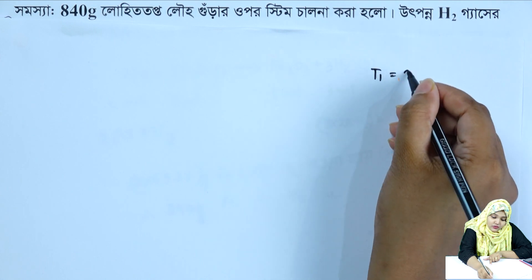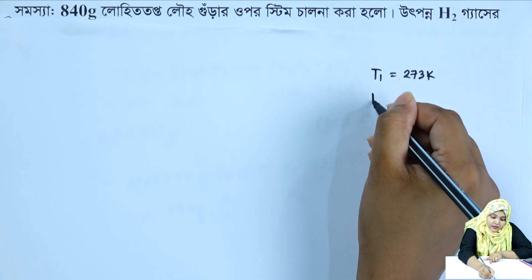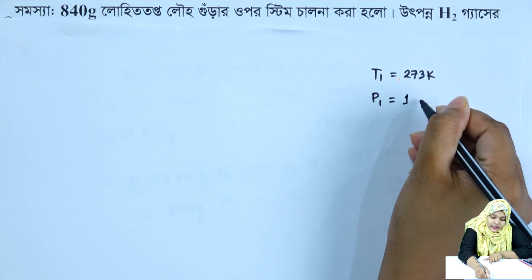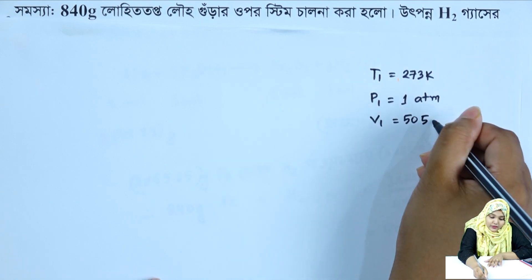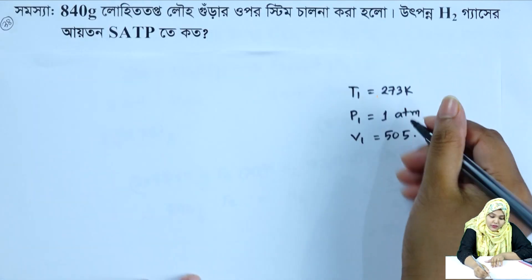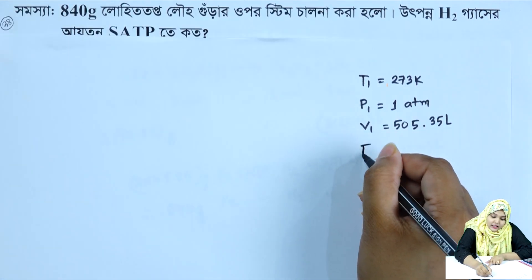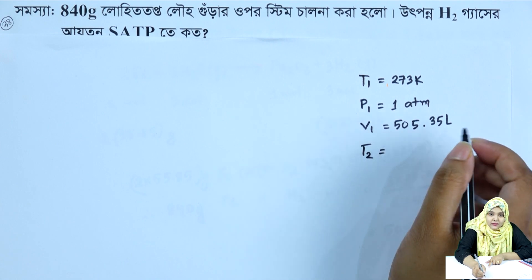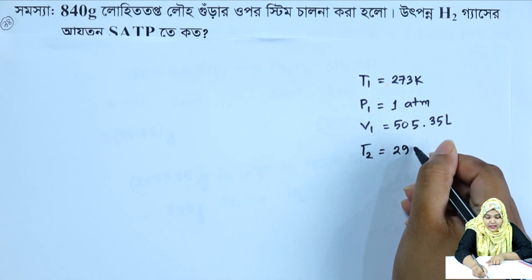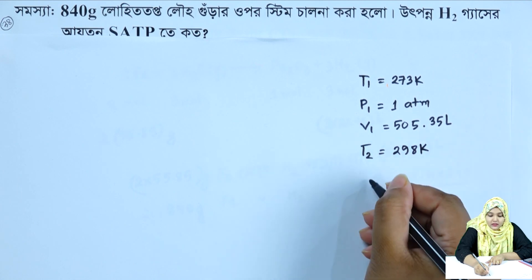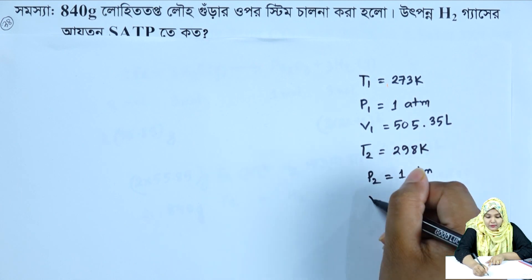We have to convert this step using the gas law. P1 is equal to 1 atm. V1 is equal to 505.35 liters. T2 is equal to 25 degrees. 298 Kelvin.